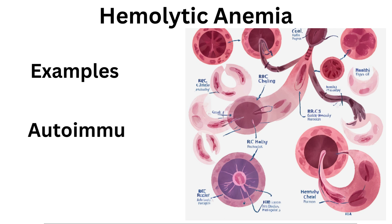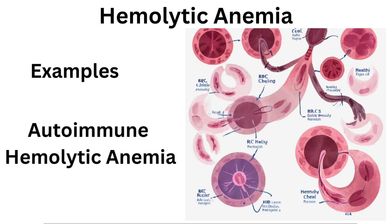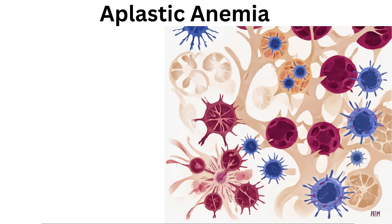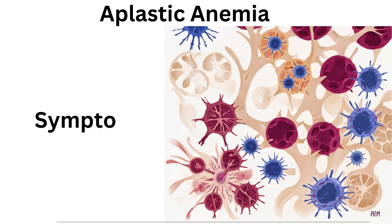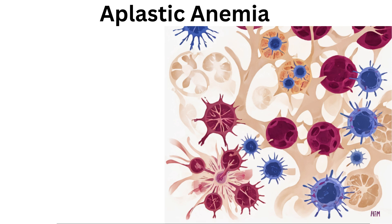Autoimmune hemolytic anemia occurs when the immune system mistakenly attacks and destroys red blood cells. Aplastic anemia is characterized by a damaged or dysfunctional bone marrow leading to decreased production of red blood cells, white blood cells, and platelets. Symptoms include fatigue, weakness, frequent infections, and bleeding tendencies.